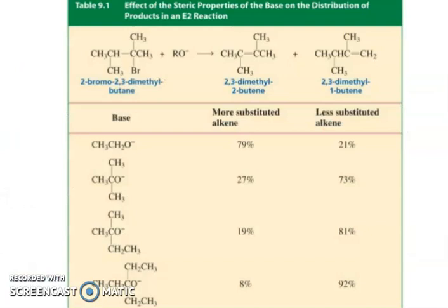So, effect of the steric properties of the base on distribution of products in E2 reactions. If you have this substrate with ethoxide (RO⁻), you get two products — one more substituted, one less substituted. With ethoxide: more-substituted product 79%. With t-butoxide: only 20% more-substituted, 73% less-substituted. With an even bulkier base: 90% less-substituted, only 8% more-substituted; and 92% will give the less-substituted alkene.